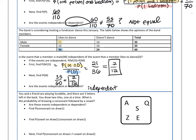In this case, the probability of being male given that you like to dance is the same as the probability of being male. So we would say that these two events are independent.